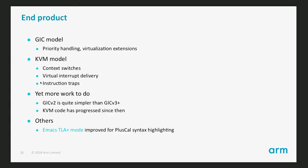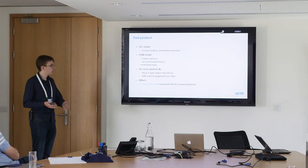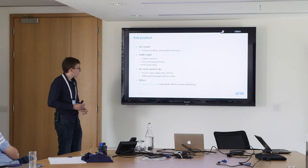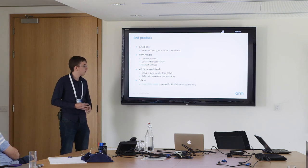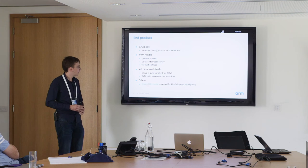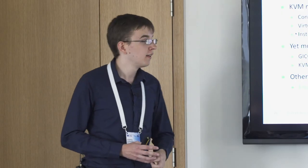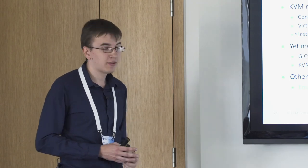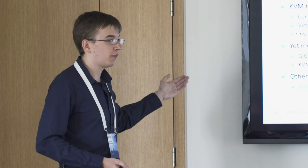In terms of overview of what I have: a GIC model handling different priorities with virtualization extensions, and a KVM model with context switching between hypervisor and guest, interrupts delivered to the guest, and trapped instructions causing returns to the hypervisor. To add some contrast, GIC v2 — which this is based on — is quite simpler than GIC v3 and later versions, and the code has progressed since then given the Linux kernel's churn rate. The next step is updating the model to the current Linux kernel code and checking whether fixes actually solve the problems.